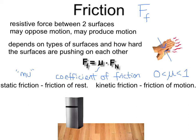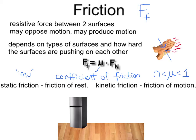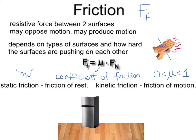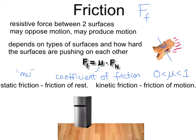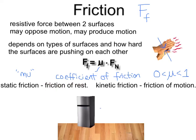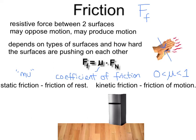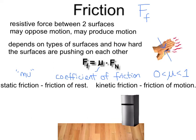Do you ever wonder why it takes more force to get something moving than to keep it moving? If you were to push a refrigerator from rest, it takes a lot of force to get the refrigerator to start moving. But once you apply enough force and get it moving, it doesn't take as much force to keep it moving. The first force you're pushing against is the force of static friction — this is the friction of rest. Once you push harder than that force and the refrigerator starts moving, now you're opposing the force of kinetic friction, which is less than the force of static friction. The reason why is that the coefficient of static friction is actually greater than the coefficient of kinetic friction — it takes a lot more force to get something moving than to keep it moving.